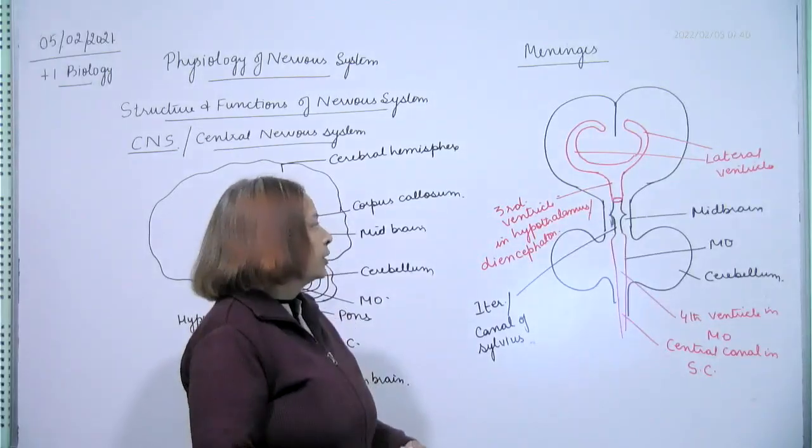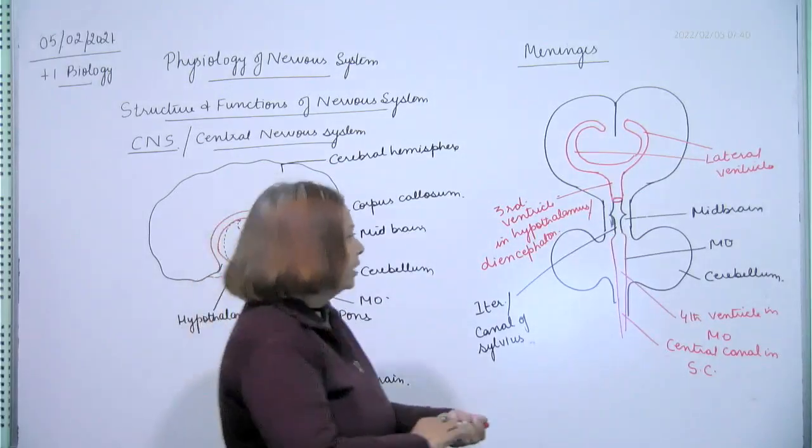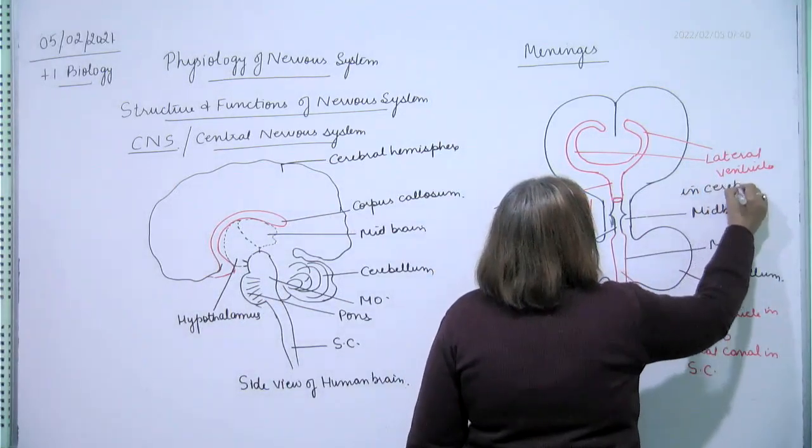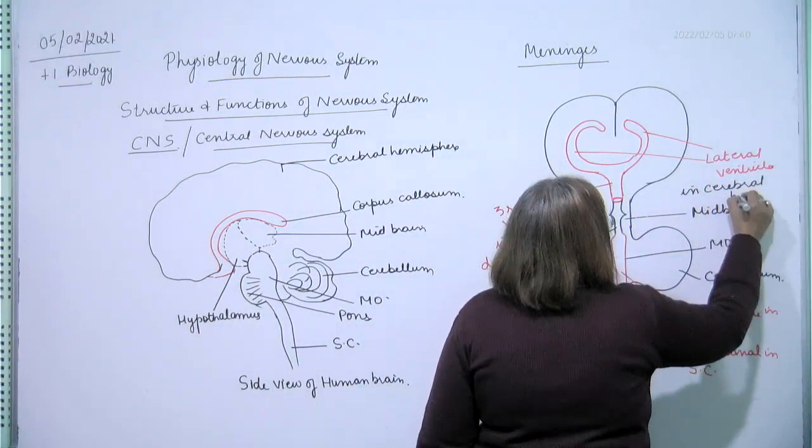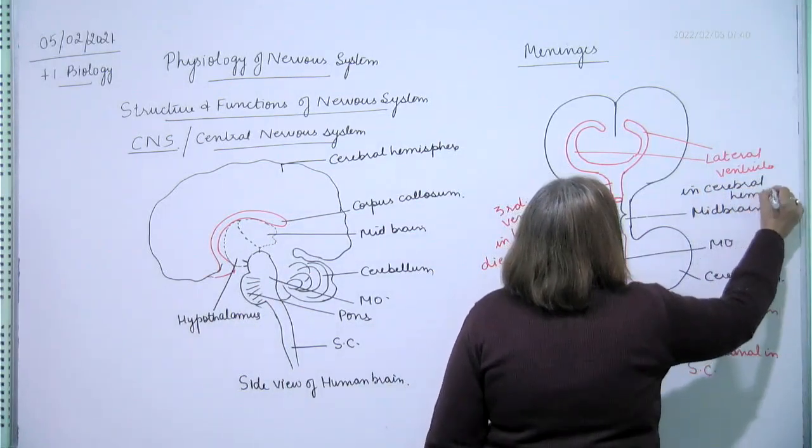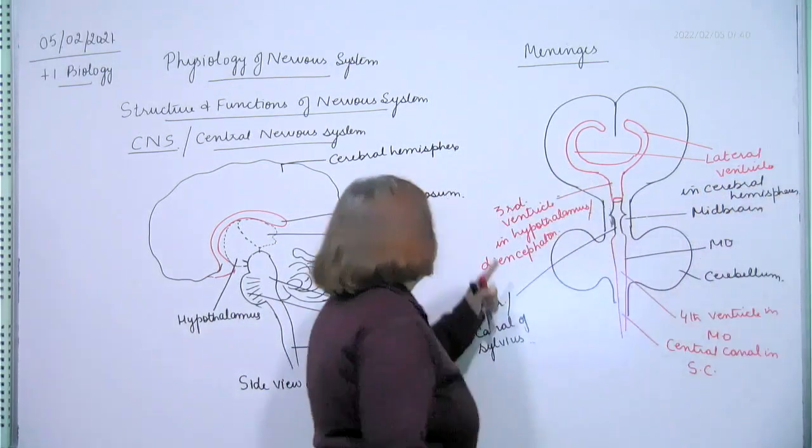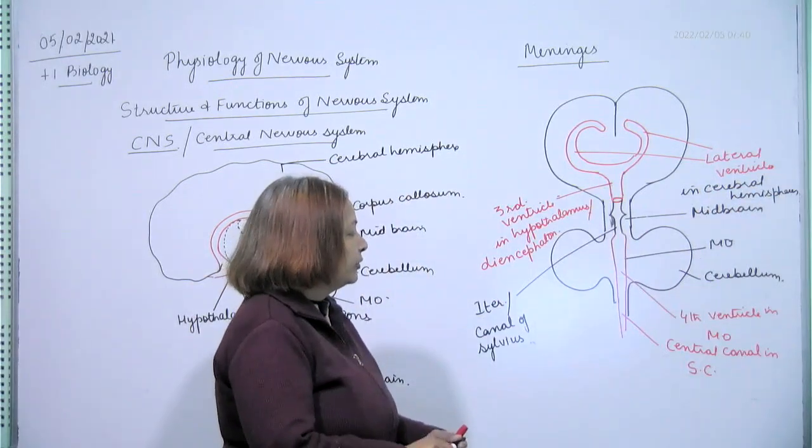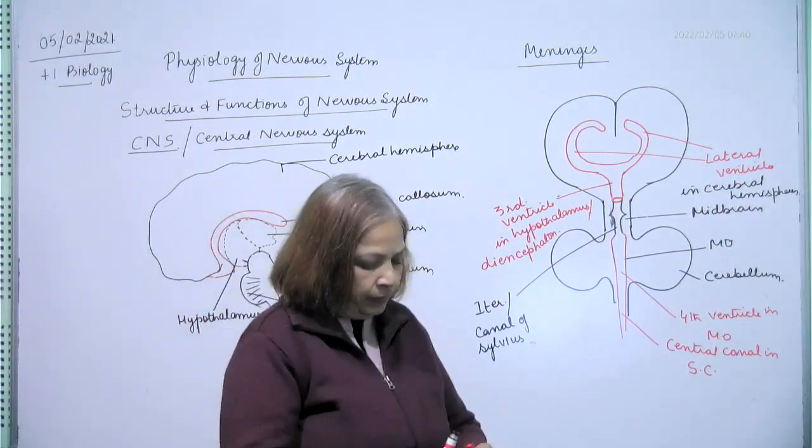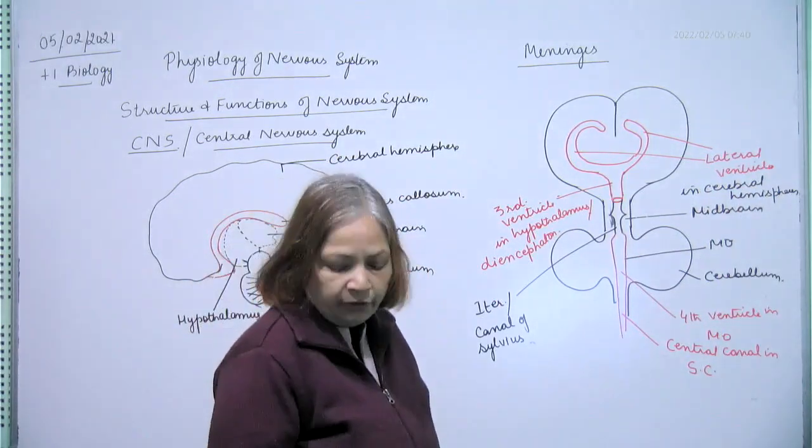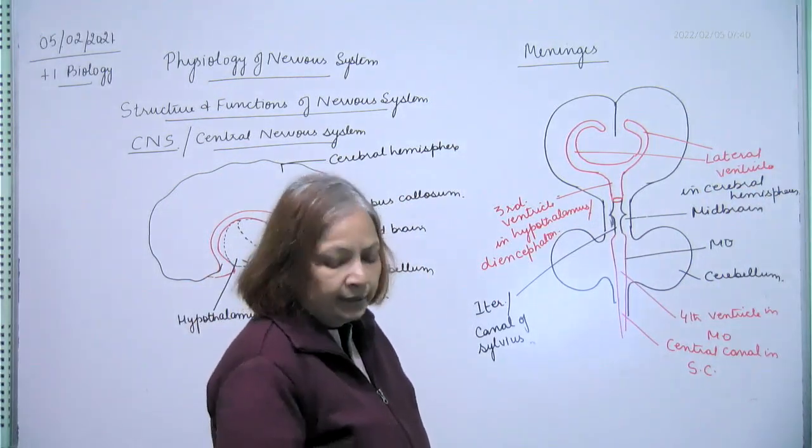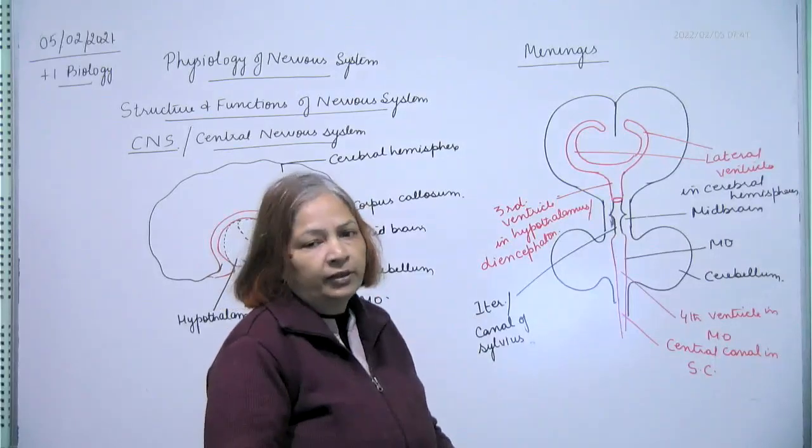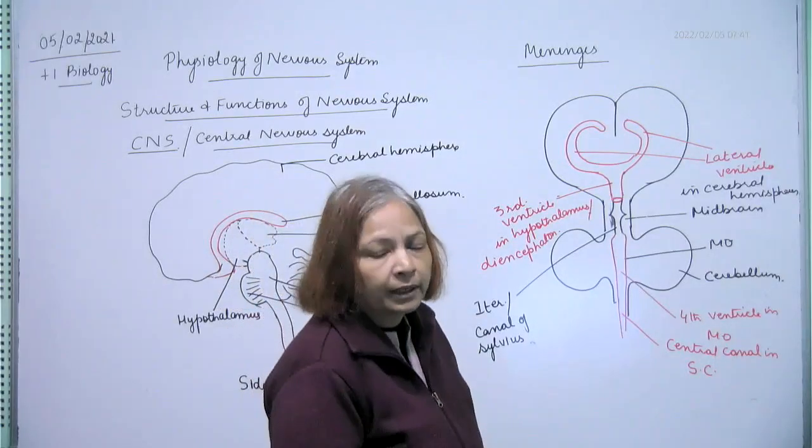This is four ventricles. Two lateral ventricles in cerebral hemispheres. Third ventricle in diencephalon or hypothalamus. And fourth ventricle in medulla oblongata. The third and fourth ventricle, they are joined by iter, that is canal of silvius.